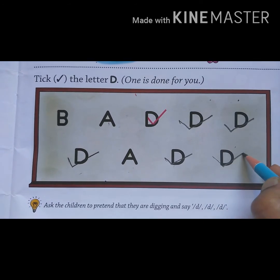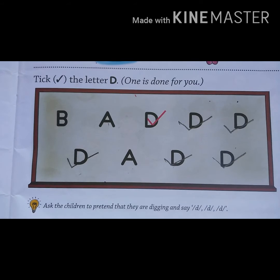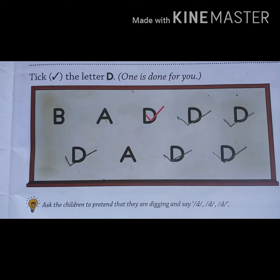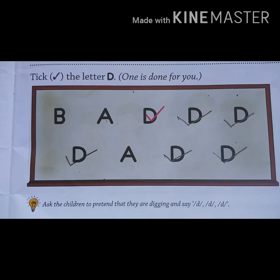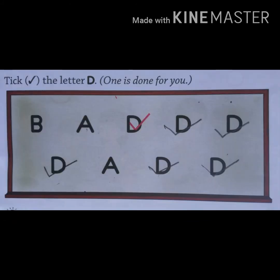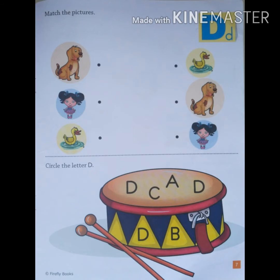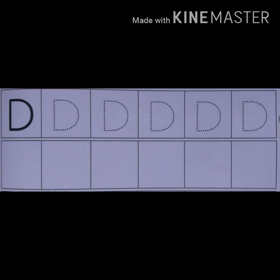So here we completed our activity. Now complete your activity in your practice book on page number 7. Match the pictures and circle the letter D. And page number 41, trace the letter D.